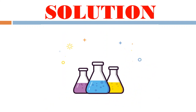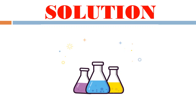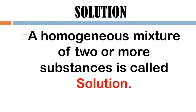In this part, we will first learn about the solution. A solution is a homogeneous mixture of two or more substances. A homogeneous mixture is a mixture with just one phase or uniform composition. Such a mixture is called a solution.